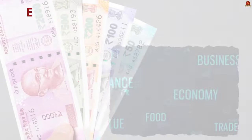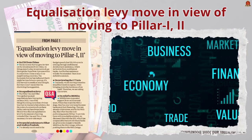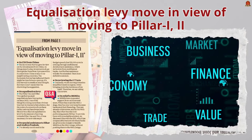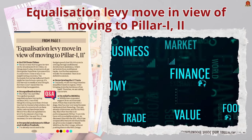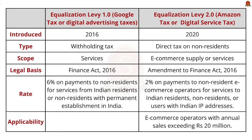Our next topic is equalization levy — a question on this was already asked in UPSC Prelims 2018 and it is a potential area for UPSC Prelims 2025. Equalization Levy 1.0, colloquially called the Google Tax, was started in 2016 as a withholding tax. It applies only to services and is part of the Finance Act 2016 — not an amendment to the Income Tax Act of 1961. It is charged at a rate of 6% on payments for specified services received by a non-resident from an Indian resident or a non-resident with a permanent establishment in India.